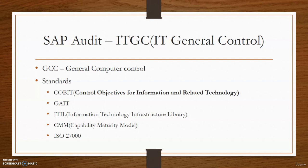We can also follow the ISO 27000 series of standards. This set of security standards evolved from what was originally developed as British Standard BS7799, covering information security management. ISO 27000 series is often used by auditors to benchmark security practices, many of which fall into the broader category of ITGC.